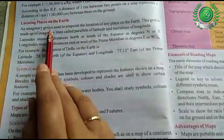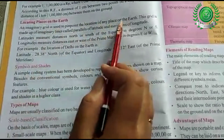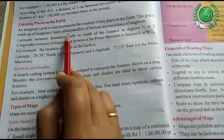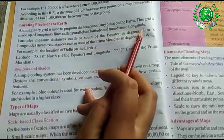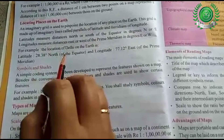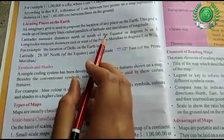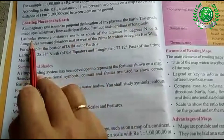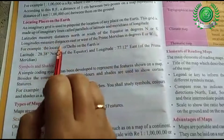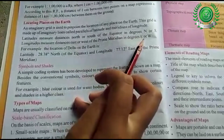An imaginary grid is used to pinpoint the location of any place on the earth. This grid is made up of imaginary lines called parallels of latitude and meridians of longitude. Latitude measures distance north and south, and longitude measures distance east and west of the prime meridian, in degrees.